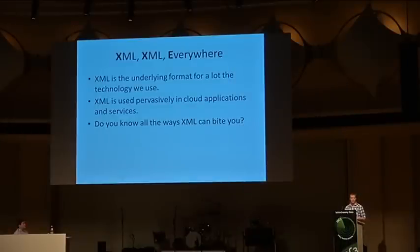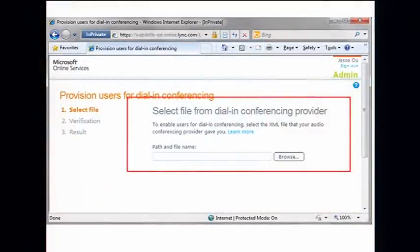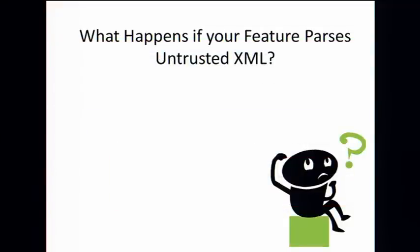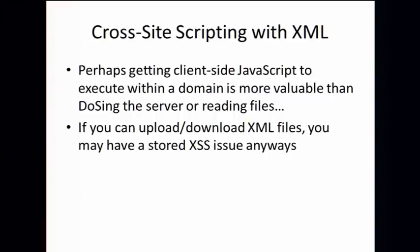XML attacks. XML is used pretty much everywhere — in configuration setups and pervasively in cloud applications, which is where we spend a lot of our day. There are really features that take user-controlled XML — for example Link Online and ACS, which are products we support. What happens if your feature parses untrusted XML? There are tons of things that can go wrong. In this talk we will only be talking about the cross-site scripting vectors using XML and XSL. Getting client-side JavaScript to execute is maybe actually what we want rather than DOSing the server or reading files — so that's our end game.